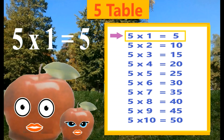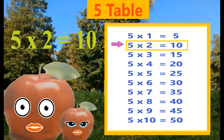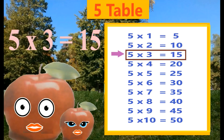Five ones are five. Five twos are ten. Five threes are fifteen.